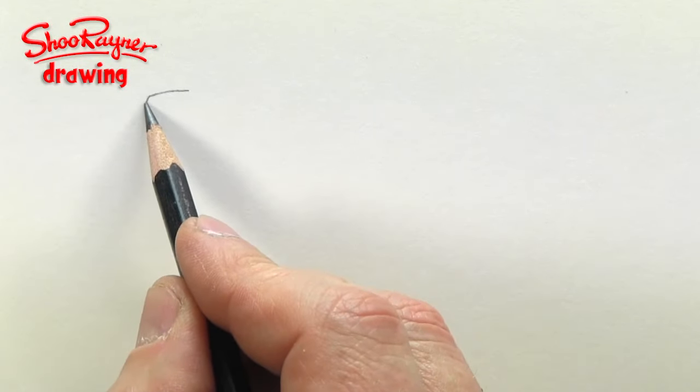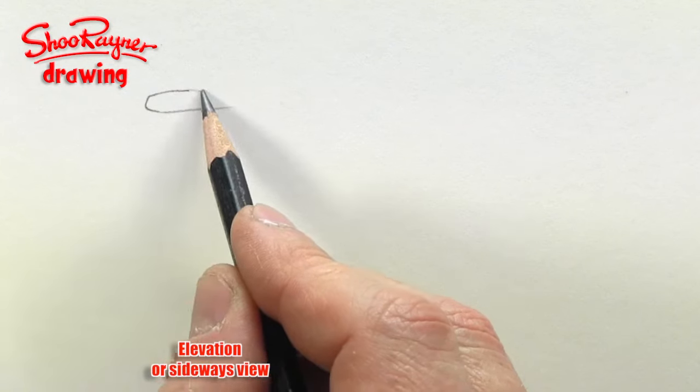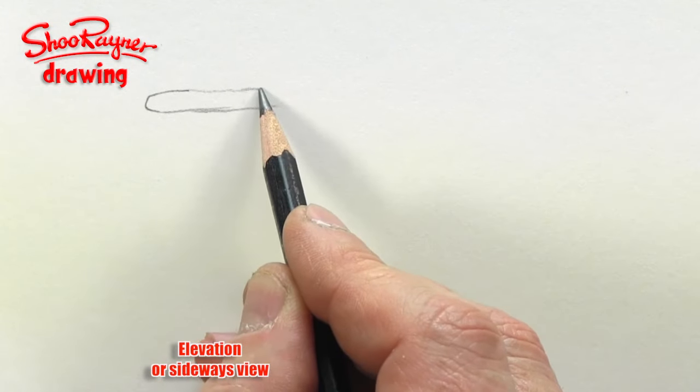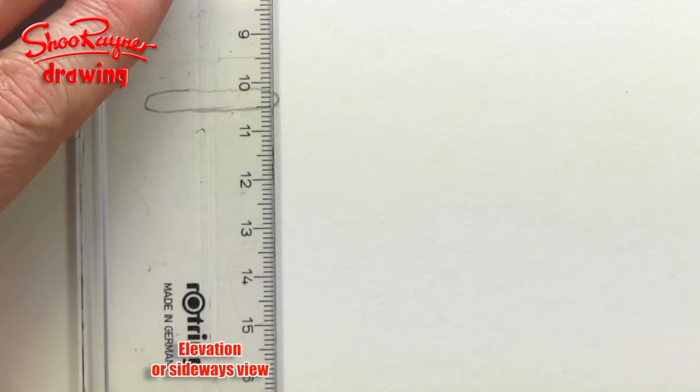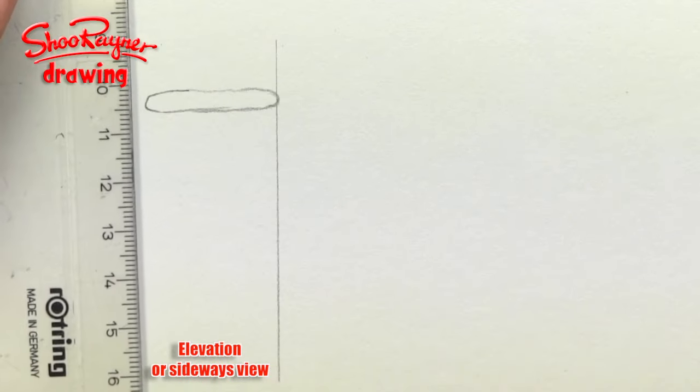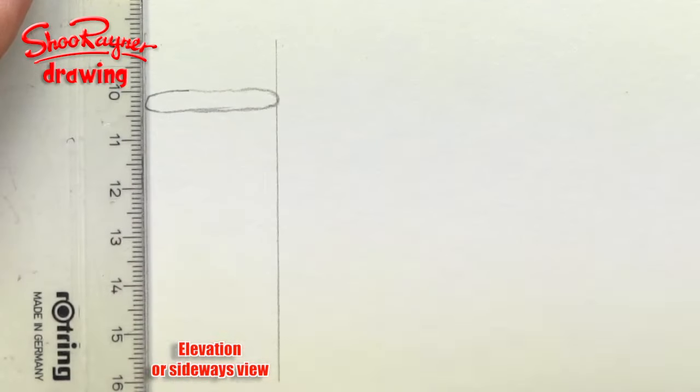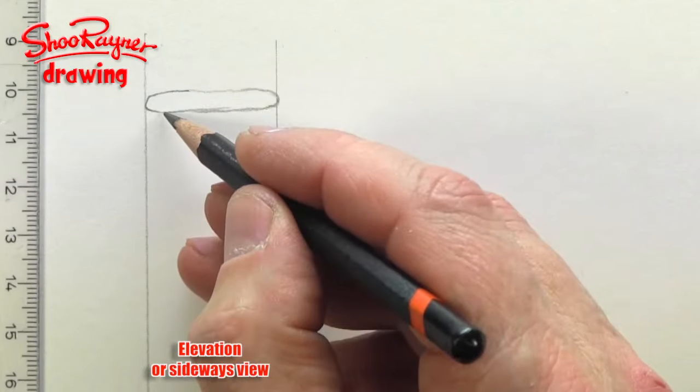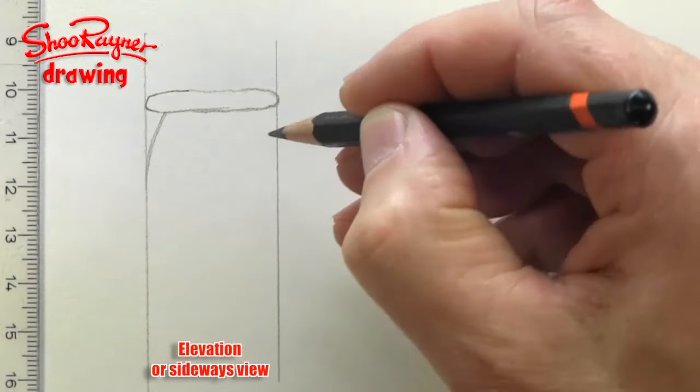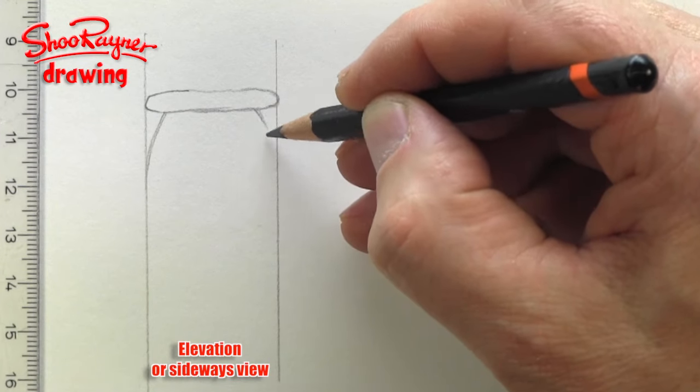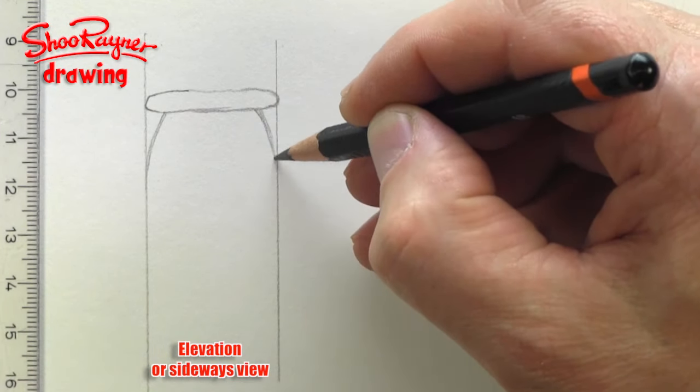So here we can draw a sideways profile or an elevation view of a vase. This will be the lid of the vase, and then I'm going to draw these sort of bounding lines—two parallel lines going vertically. Then we can imagine that the shoulder of the vase will come out from the rim.